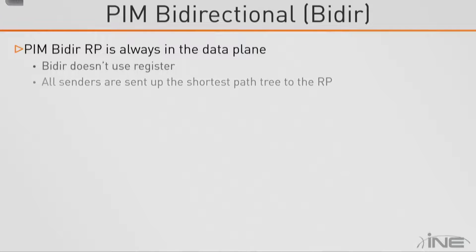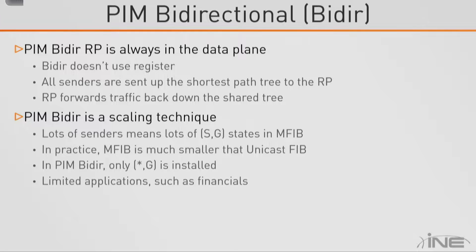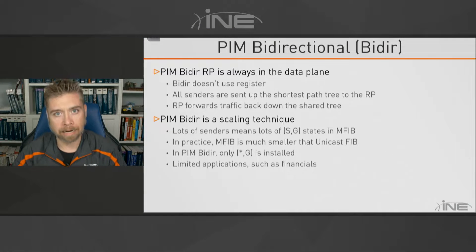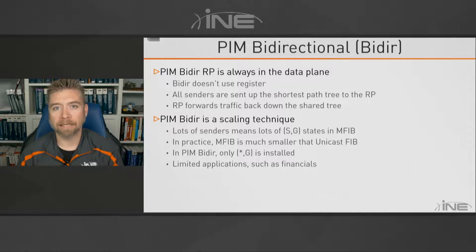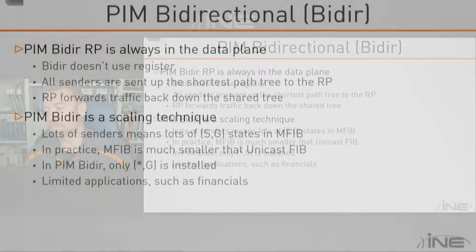The main functional difference of bidirectional PIM is that the RP is always in the data plane because no register messages are used to tell the RP about senders. Traffic from senders is forwarded up the shortest path tree to the RP, and the RP forwards it back down the shared tree to all receivers. Bidirectional PIM is a scaling technique suited for networks with many senders — a common design in financial networks where nodes are both sending and receiving multicast feeds.